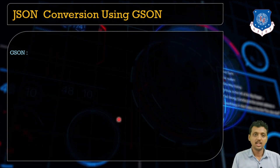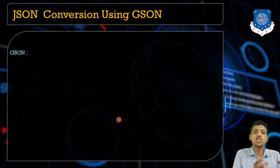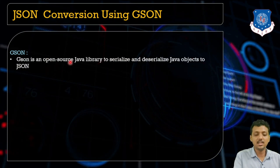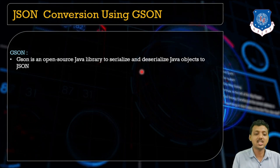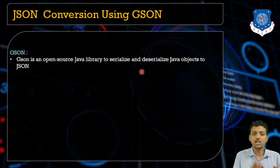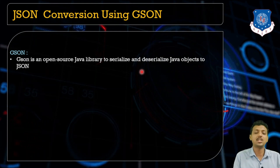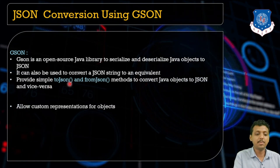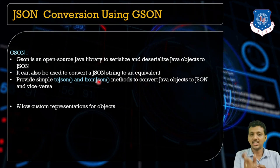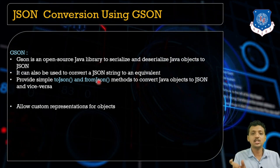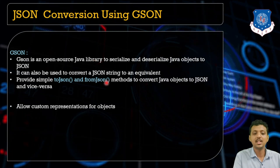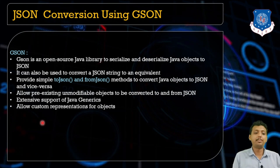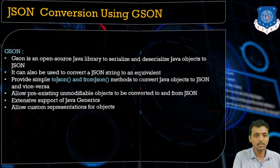Now let me introduce Gson — that means Google's Gson. It is an open source Java library used to convert JSON objects to Java objects and Java objects to JSON objects. Serialization means converting a Java object into JSON; deserialization means converting JSON data into a Java object. It also provides simple toJson and fromJson methods: toJson converts a Java object to JSON, and fromJson converts JSON back to a Java object.